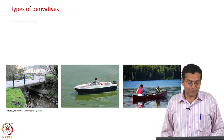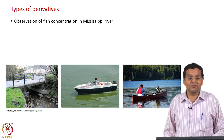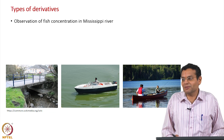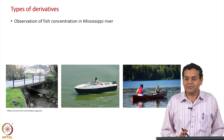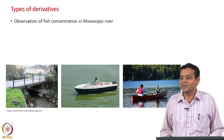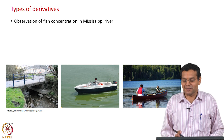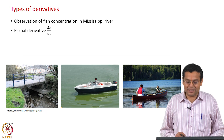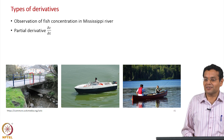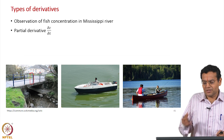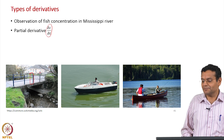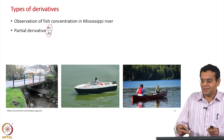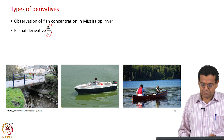Why these photographs? Observation of fish concentration in the Mississippi River — fish concentration and Mississippi River are chosen simply to illustrate the discussion in the book by Bird, Stewart, and Lightfoot. The concentration taken is fish concentration, the river is the Mississippi River, to illustrate the concepts compared to taking a Ganges or a Cauvery here. The first derivative is the partial derivative — at a particular location you stand and measure the fish concentration, measuring the local rate of change of concentration.